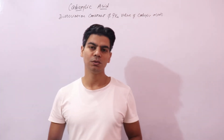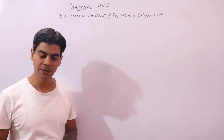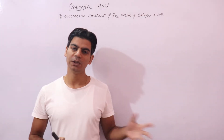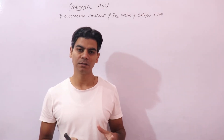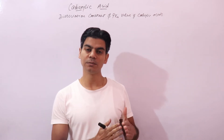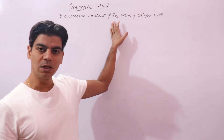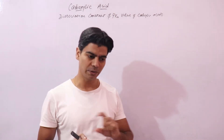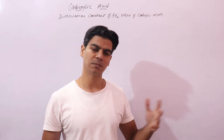In today's class we will look into the dissociation constant and pKa value of carboxylic acids. We will see how acid strength can be expressed in terms of dissociation or ionization constant, and in terms of pKa value. To express the strength of an acid in terms of pKa value, we will use a relation learned before in ionic equilibrium.